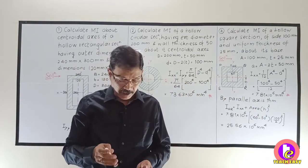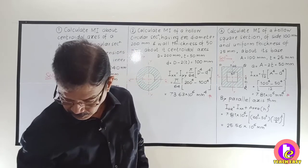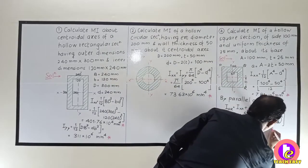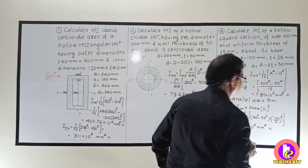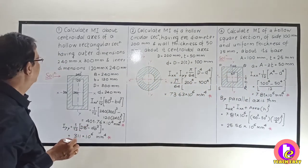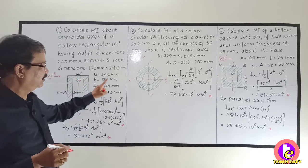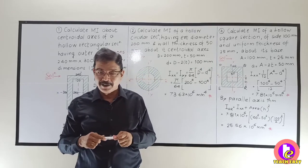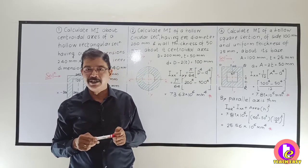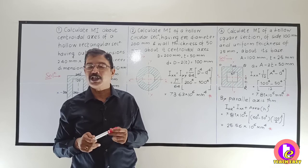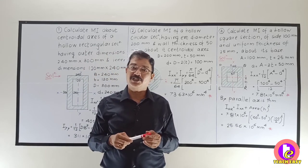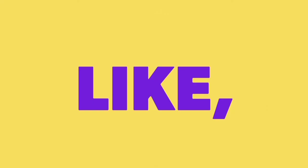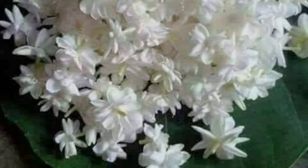In this lecture, we solved the problems of hollow symmetrical sections — three problems: hollow rectangular section, hollow circular section, and hollow square section. Next time we will go for moment of inertia of standard structural sections. Thank you. Bye.